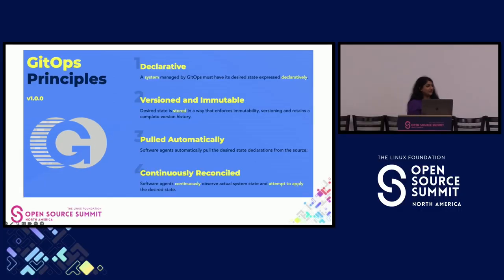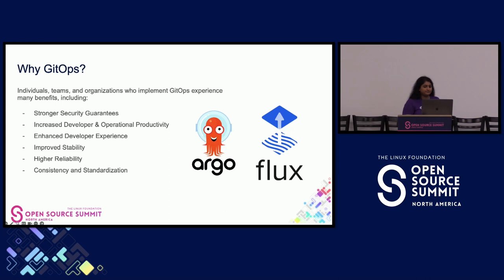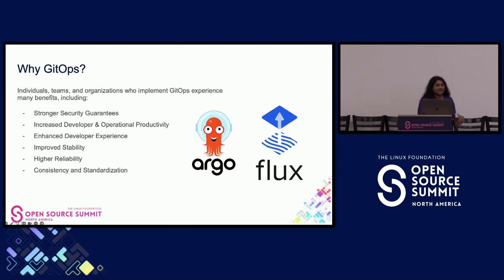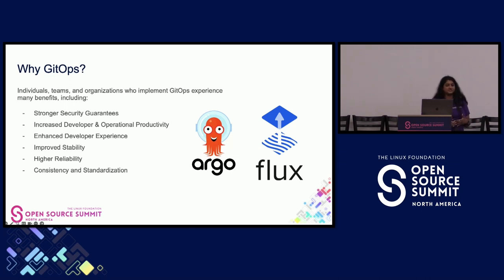Don't feel like you have to have all of them done in order to use GitOps. Everyone's journey looks really different and you can start using GitOps practices — start with the declarative approach and then add in hardening as you go. The three main value props of GitOps are security, velocity, and reliability. Because of GitOps tools' unique ability to treat everything as code, it creates a direct impact on security. All configuration and security policy treated as code can be held in version control and input into an automated pipeline, so every change is reviewed and automated — no manual processes. This leads to stronger security guarantees, increased developer and operational productivity, improved stability, higher reliability, consistency, and standardization.